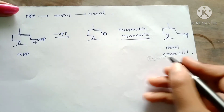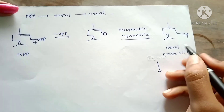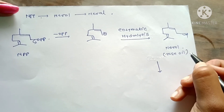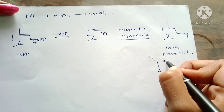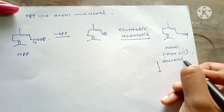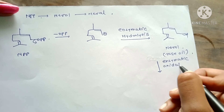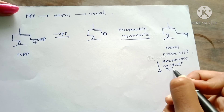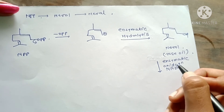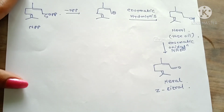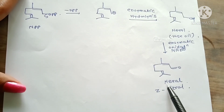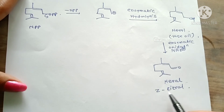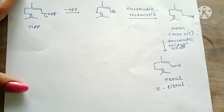The next step is enzymatic oxidation, which takes place by NAD+. NAD+ acts as the oxidizing agent and gives the structure of Neral. This is the structure of Neral, also called Z-citral. Thank you so much for watching this video.